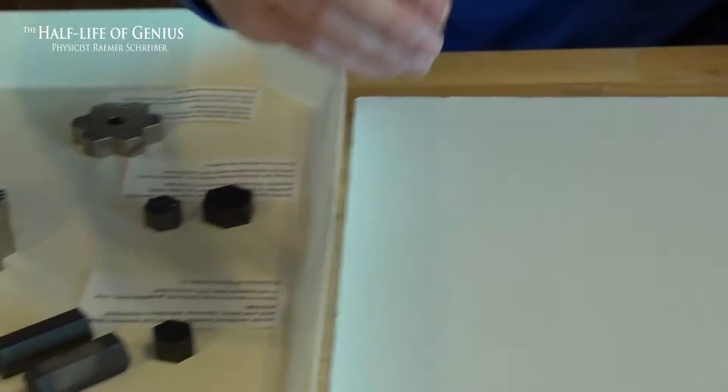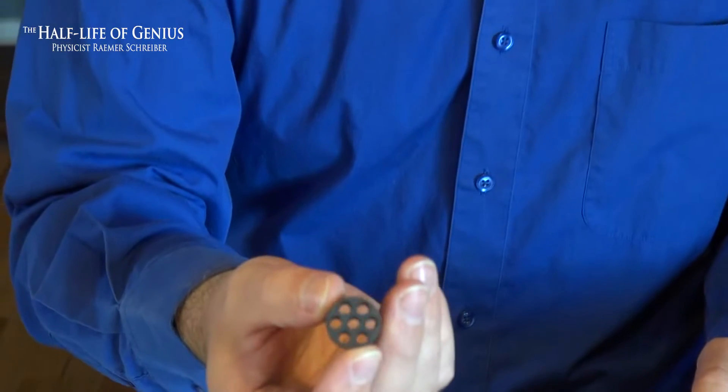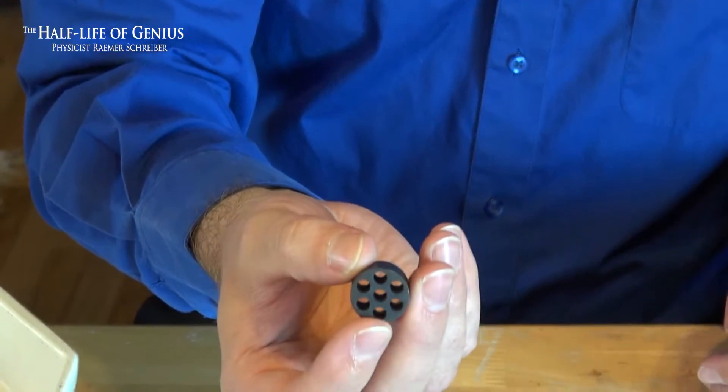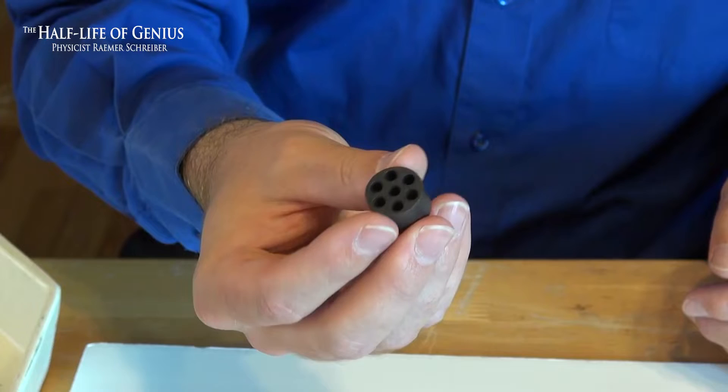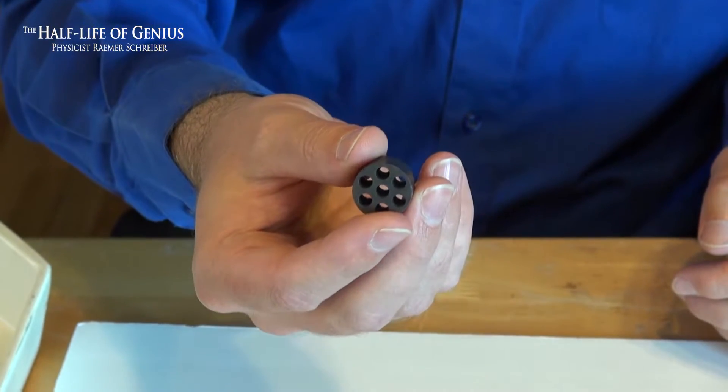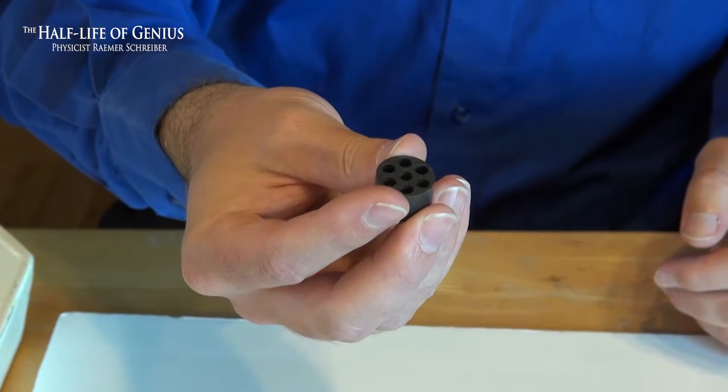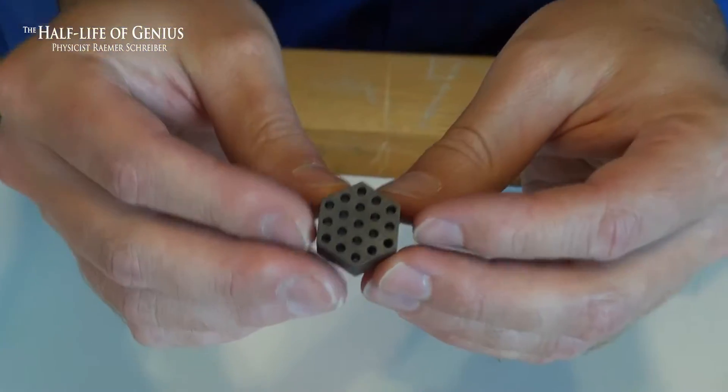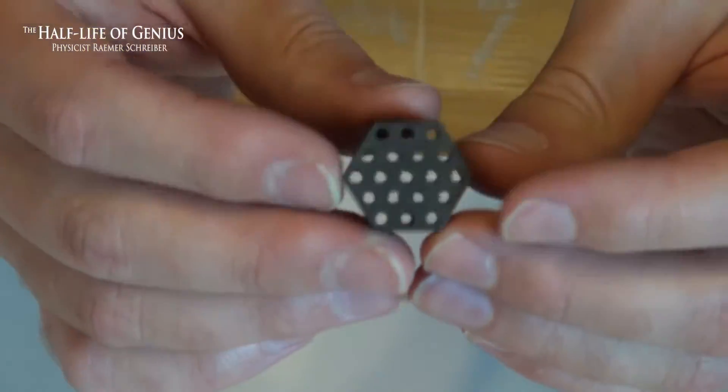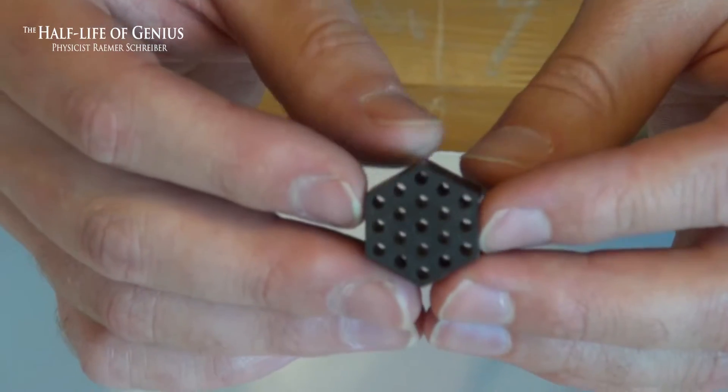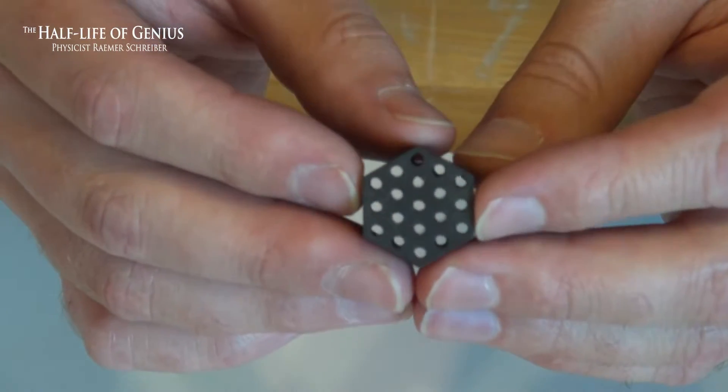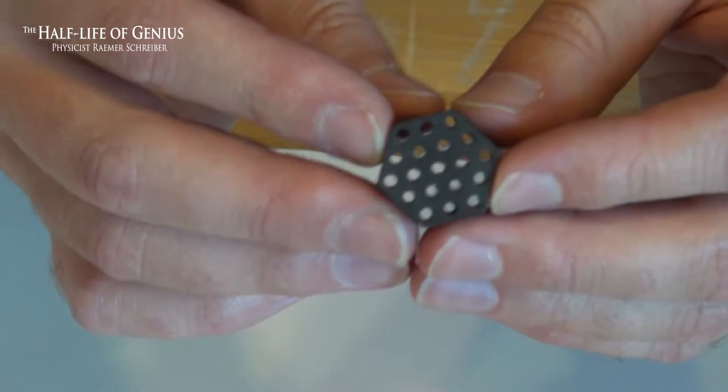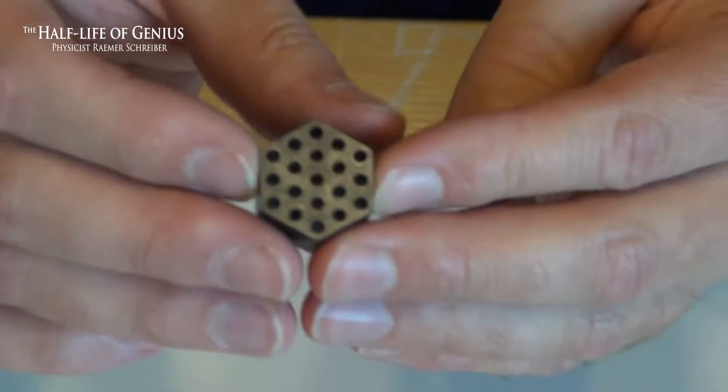They moved to other cylindrical fuel elements. This is typical of sort of the second generation or the B series of the Kiwi program. We're talking about sort of late 1950s here. Finally, the ultimate solution that they settled on was this 19-hole hexagonal fuel element. And again, this material would have been made out of uranium carbide and graphite. They settled on this in the Kiwi B4A test.